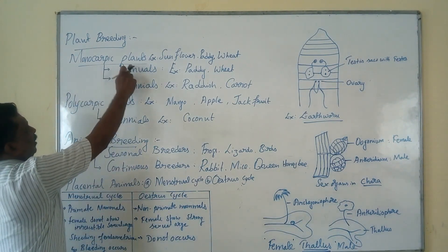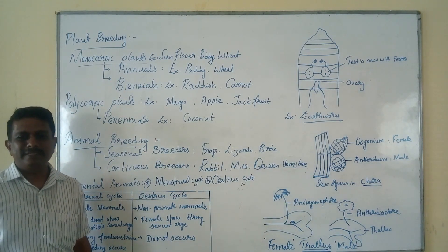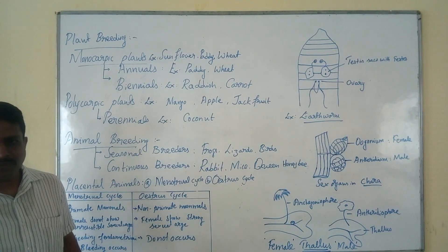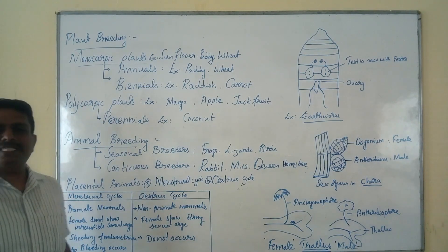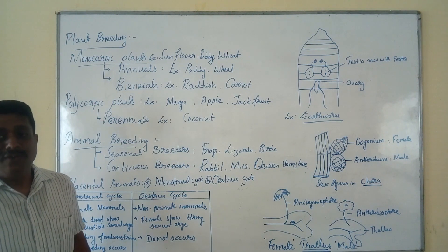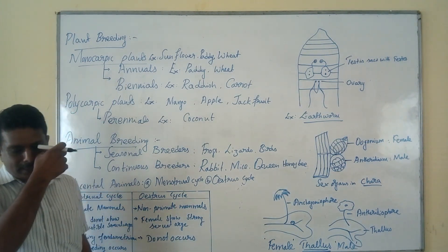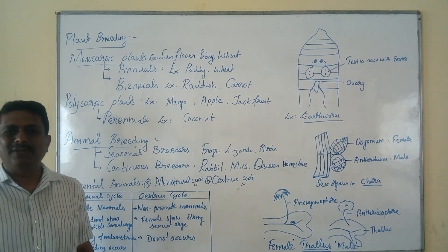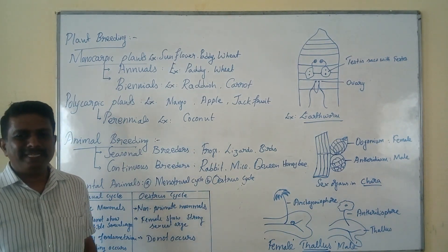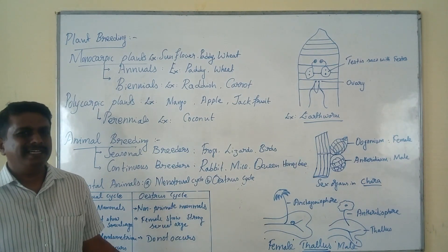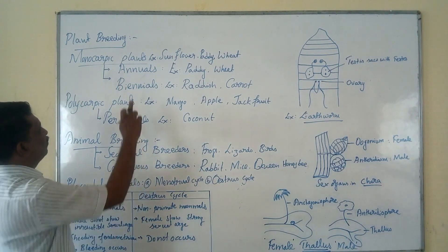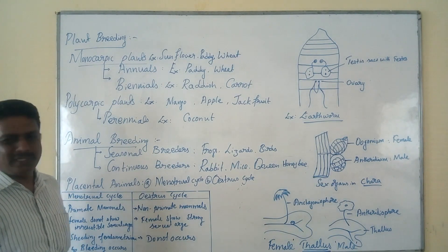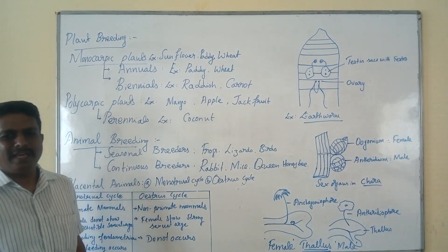Monocarpic plants are either annuals or biennials. In valid terminology, annuals are defined as plants which complete their vegetative growth followed by flowering in one particular season, after which they die. This annual nature is seen in case of paddy and wheat.